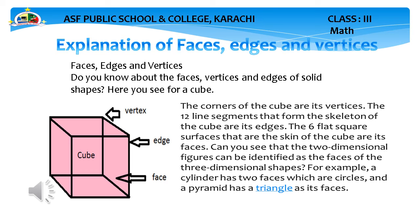Explanation of faces, edges and vertices: do you know about the faces, edges and vertices of a solid shape? Here you see for a cube — we have a simple cube shape. The corners of the cube are its vertices. The 12 line segments that form the skeleton of the cube are its edges. The 6 square shapes that are the skin of the cube are its surfaces or faces. So the cube has 6 square flat surfaces as its skin.